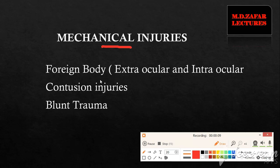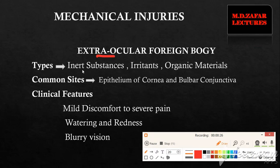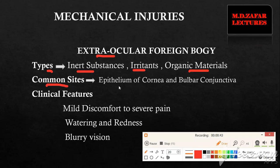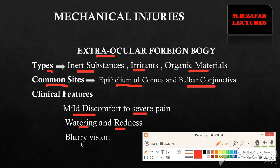Mechanical injuries are caused by foreign bodies which may be extraocular or intraocular, and also by contusion injuries and blunt trauma. For extraocular foreign bodies, the types include inert substances such as gold and silver, irritants such as iron and copper, and organic materials such as wood. The most common sites of damage include the epithelium of the cornea and the bulbar part of the conjunctiva. Clinical features include mild discomfort to severe pain, watering, redness, and blurry vision.